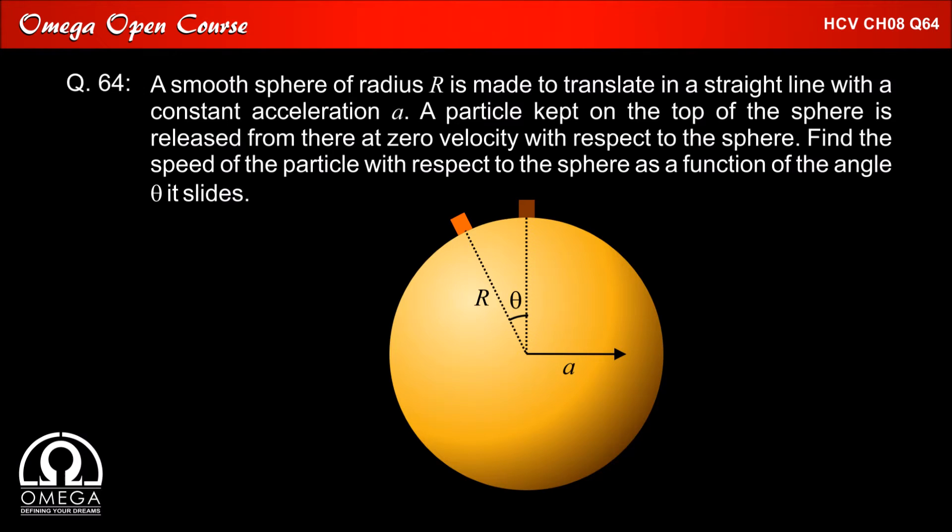A smooth sphere of radius R is made to translate in a straight line with a constant acceleration a. A particle kept on the top of the sphere is released from there at zero velocity with respect to the sphere. Find the speed of the particle with respect to the sphere as a function of the angle theta it slides.